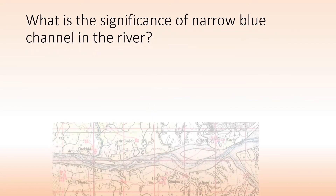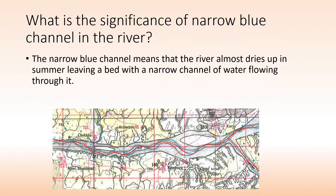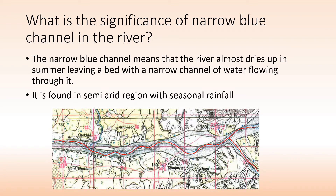What is the significance of a narrow blue channel in a river? We can see a pretty wide river but there is a very small, thin blue line inside it. The narrow blue channel means that the river almost dries up in summer, leaving a river bed with a narrow channel of water flowing through it. This is found mostly in arid regions where we have seasonal rainfall.